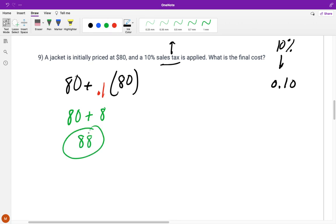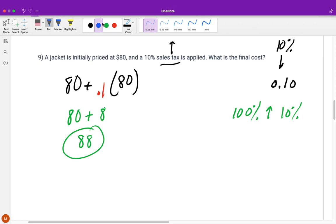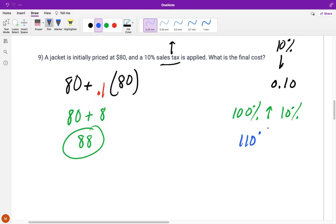And one of the things we can think of is we are paying 10% more. So normally we start out at 100% and we're increasing this by 10%. We're paying 10% more than what our bill is because that's what our tax is. So we are paying 110%. And we can then convert this to a decimal of 1.1. And if we did 80 times 1.1, we would get 88 as well.